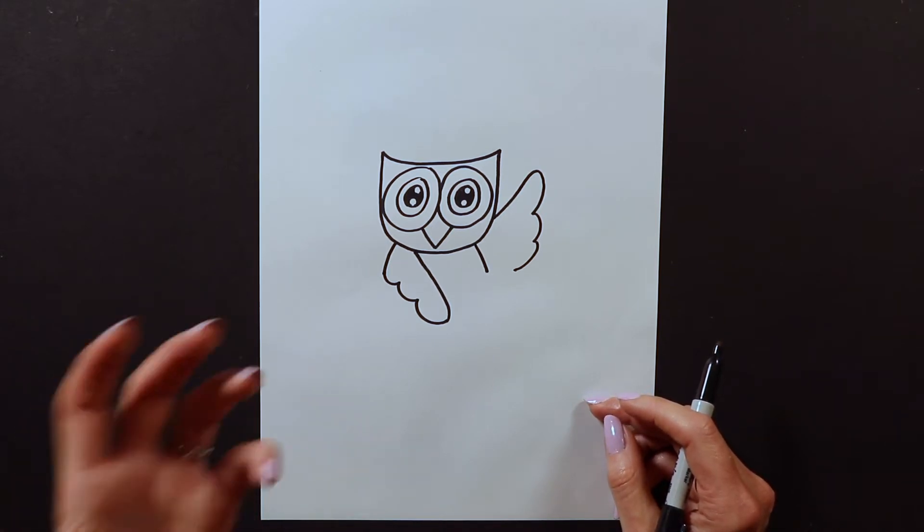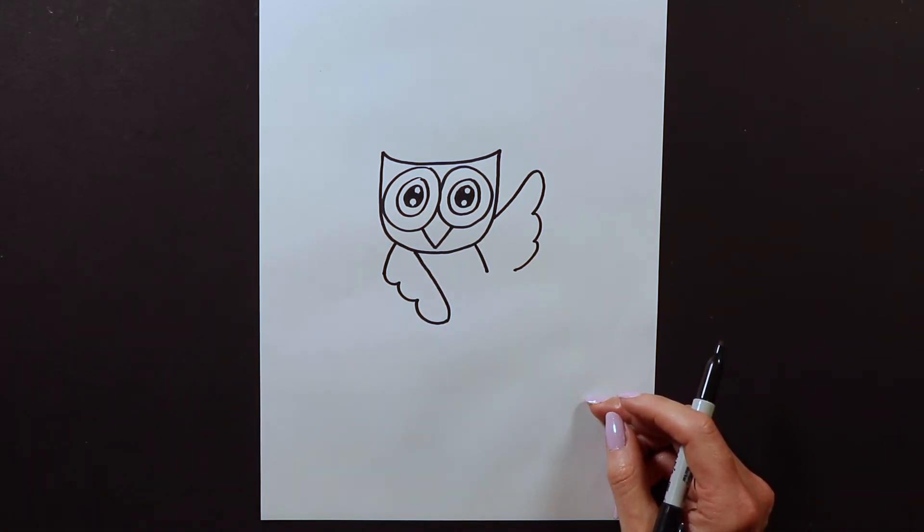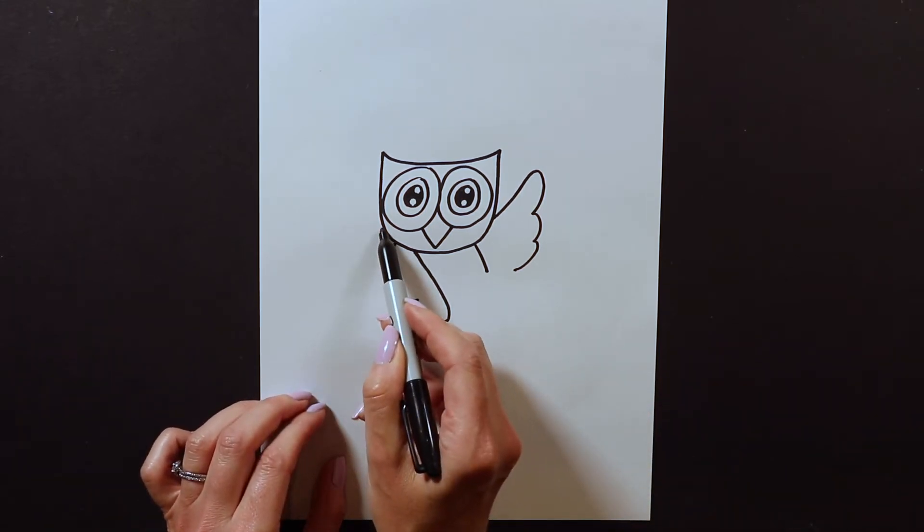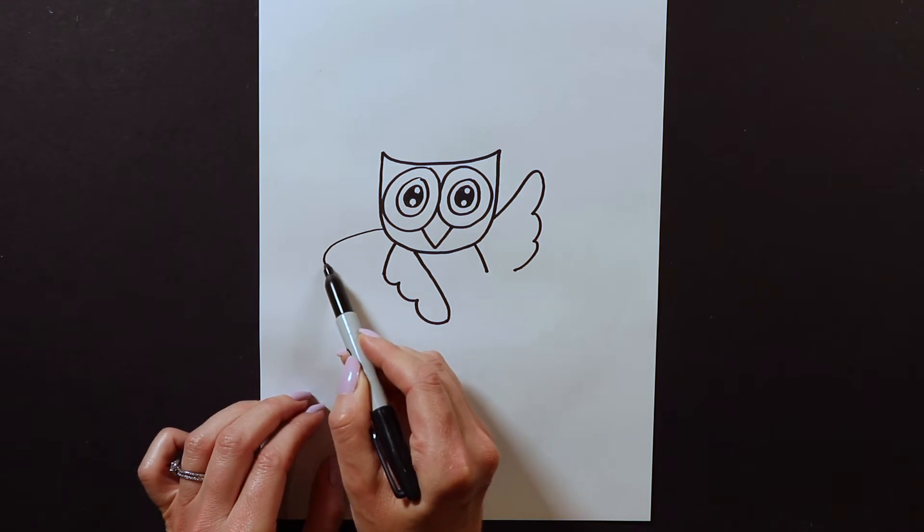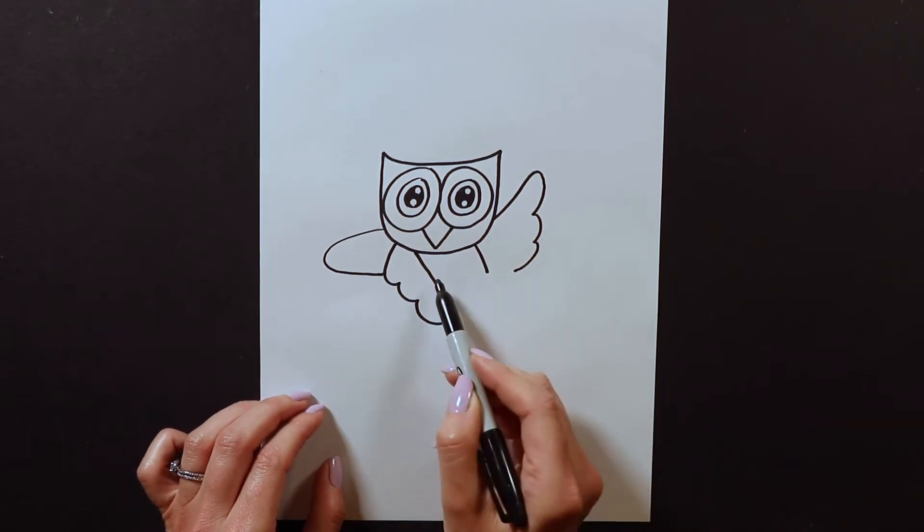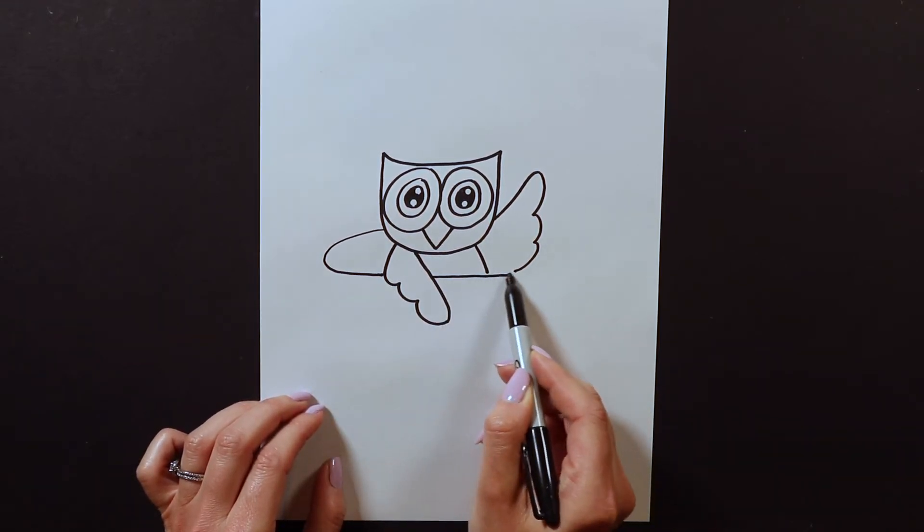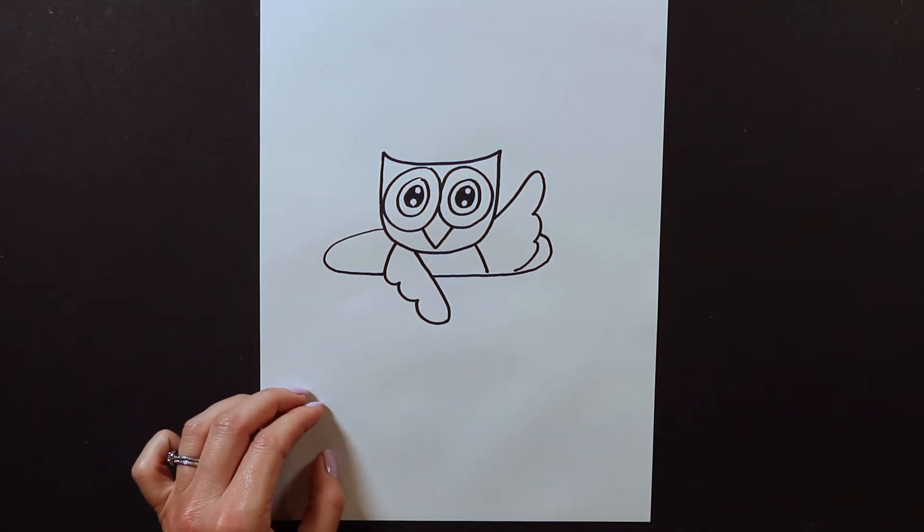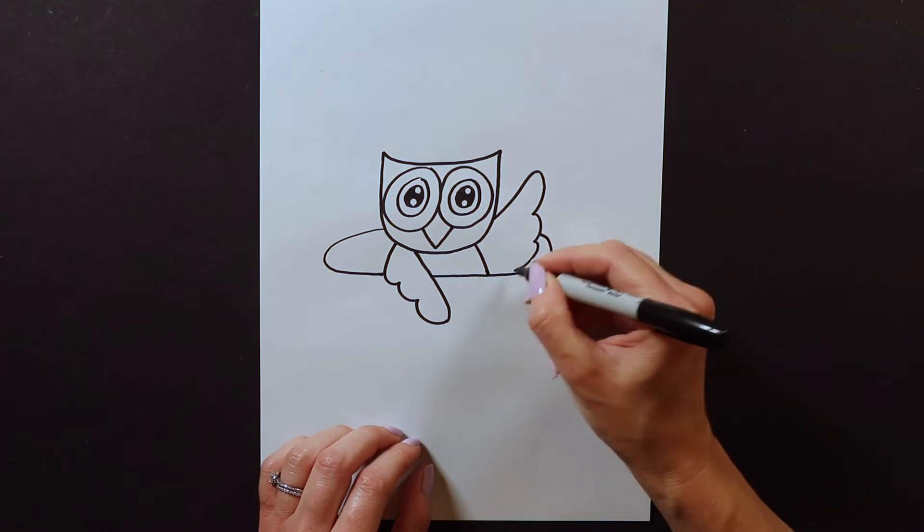Now we have our owl but we need to draw the edge of the teacup to make it look like it's sitting in a teacup. The way I do that is I start at the cheek here and I come like this and come around, hit the wing, come around and hit the wing like that. So it looks like it's sitting in a teacup.